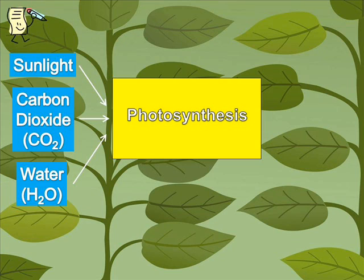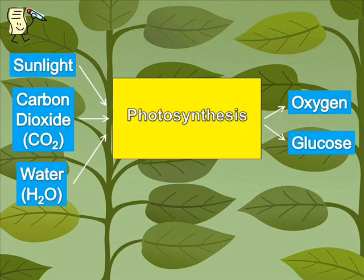If these three things are present and they go through the process of photosynthesis, then two things will be output. The first of those outputs is oxygen. The other is a chemical called glucose.